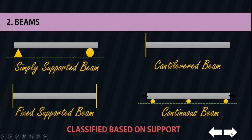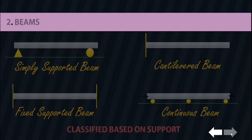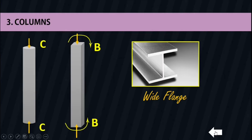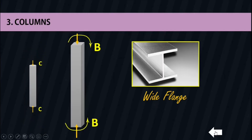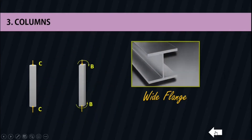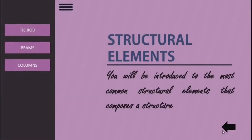The third one is columns. Columns are members that are generally vertical and resist axial compressive loads, but they are also subjected to both axial and bending moment. For metal columns, tubes and wide flange cross sections are often used, while circular and square cross sections with reinforcing rods are used for those made of concrete.